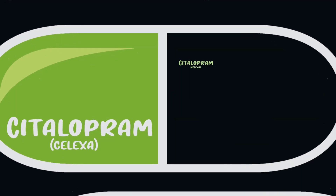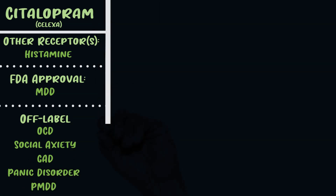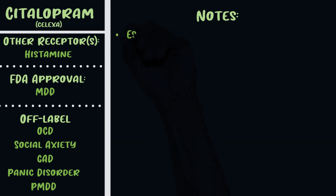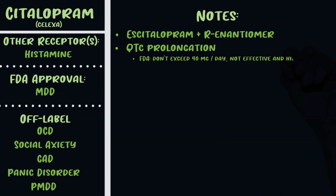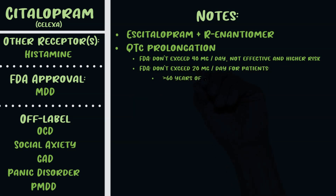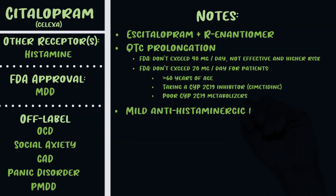The next SSRI is citalopram, or Celexa. The other receptor it hits is histamine. It's FDA approved for depression and used off-label for OCD, social anxiety, GAD, panic disorder, and PMDD. Citalopram is the racemic mixture of escitalopram and R-citalopram. I like to think of the R-enantiomer as the problematic one, so Celexa is essentially escitalopram with additional problems — it causes worse QTc prolongation. The FDA says don't exceed 40 mg/day, as higher doses don't improve effectiveness and increase QTc risk.